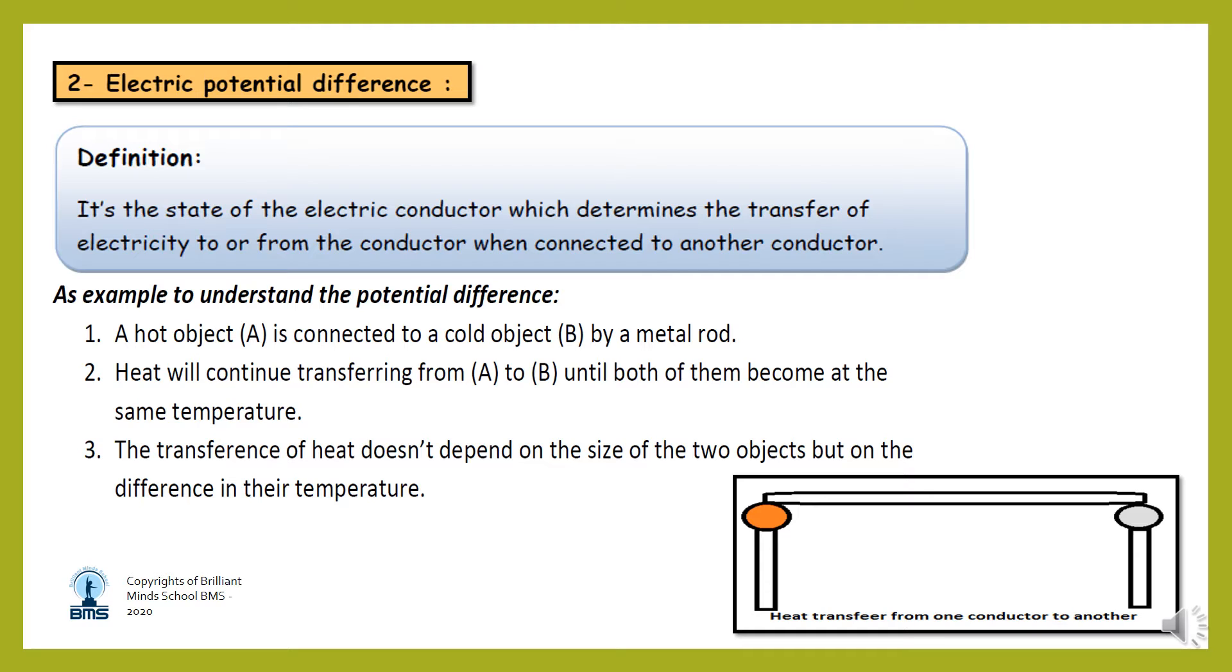If you have two objects, hot and cold objects, the heat will transfer from hot object to the cold object and it will continue transferring from hot to cold until both of them become at the same temperature. The transference of heat doesn't depend on the size of the two objects, but on difference in their temperature.